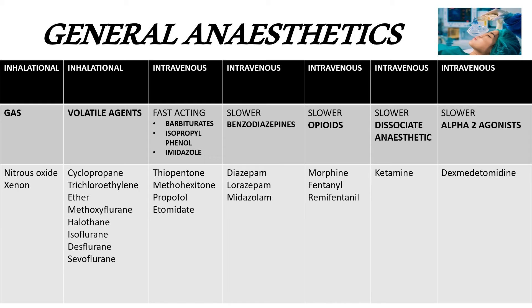The downside of propofol is its effect on blood pressure — it causes hypotension secondary to systemic vasodilation. The third fast-acting intravenous agent is the imidazole compound etomidate, which has a slightly better hemodynamic stability profile than propofol and so is used, but less frequently. The downside of etomidate is the adrenocortical suppression it may cause, which is why it is less frequently used.